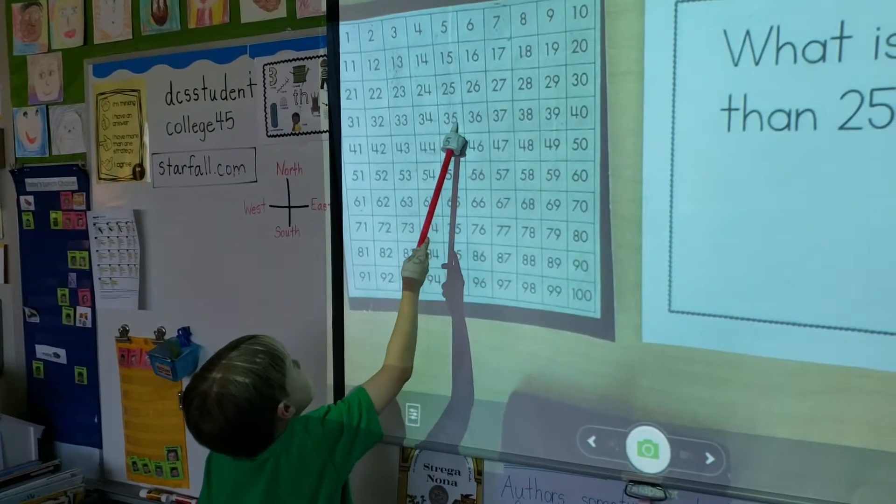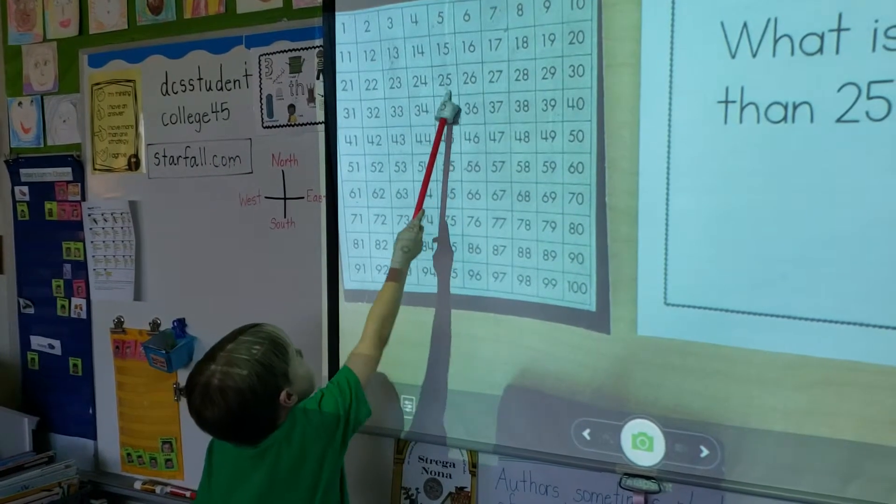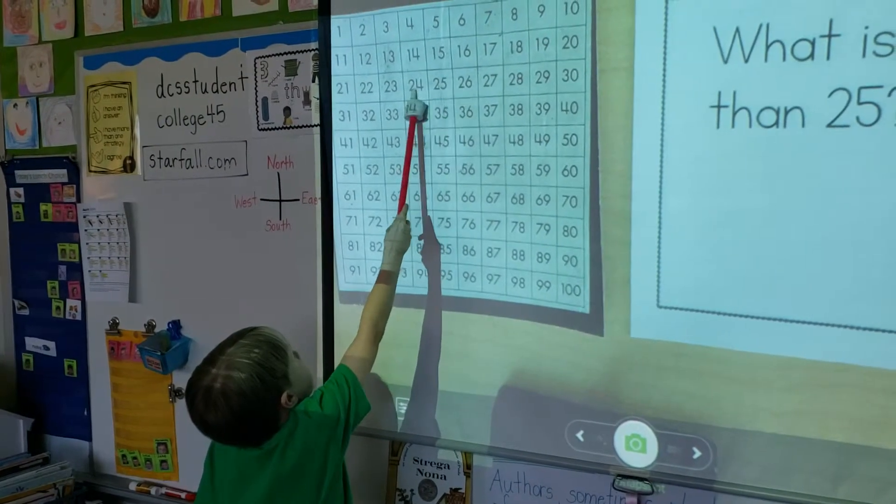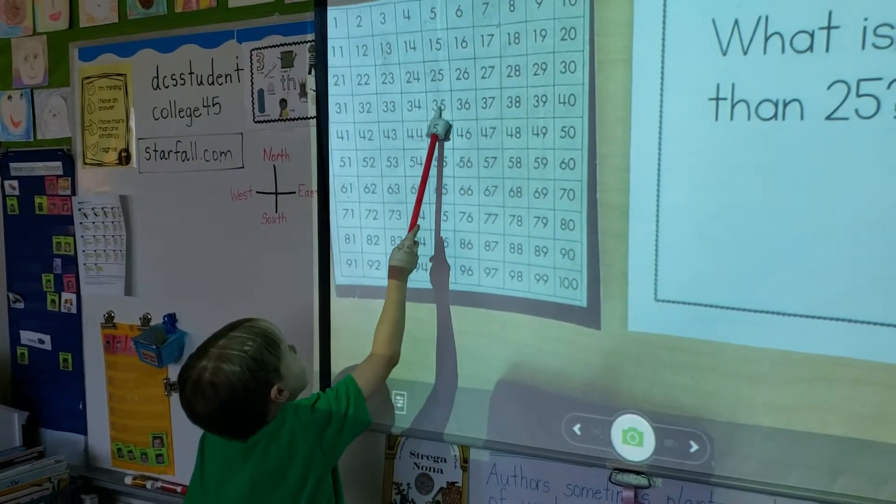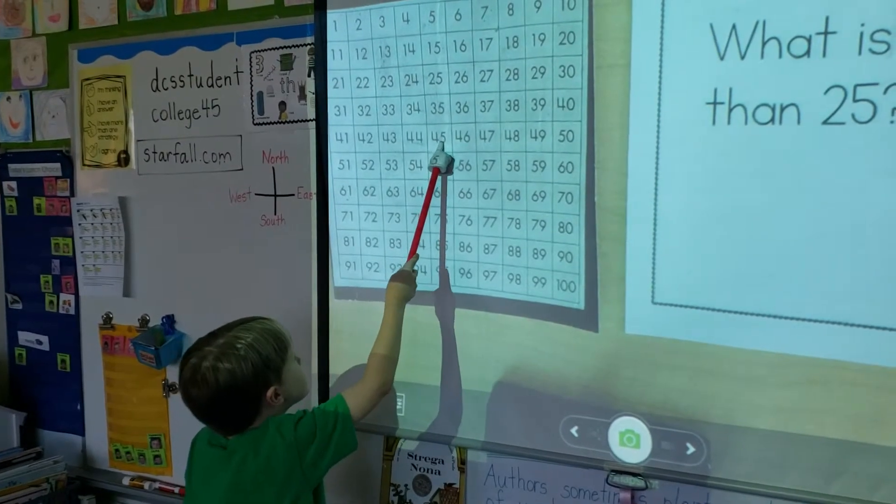So, you go down, but first you do one more. Okay. Then you go back to 25, you go down, go down to 45, which is 20.